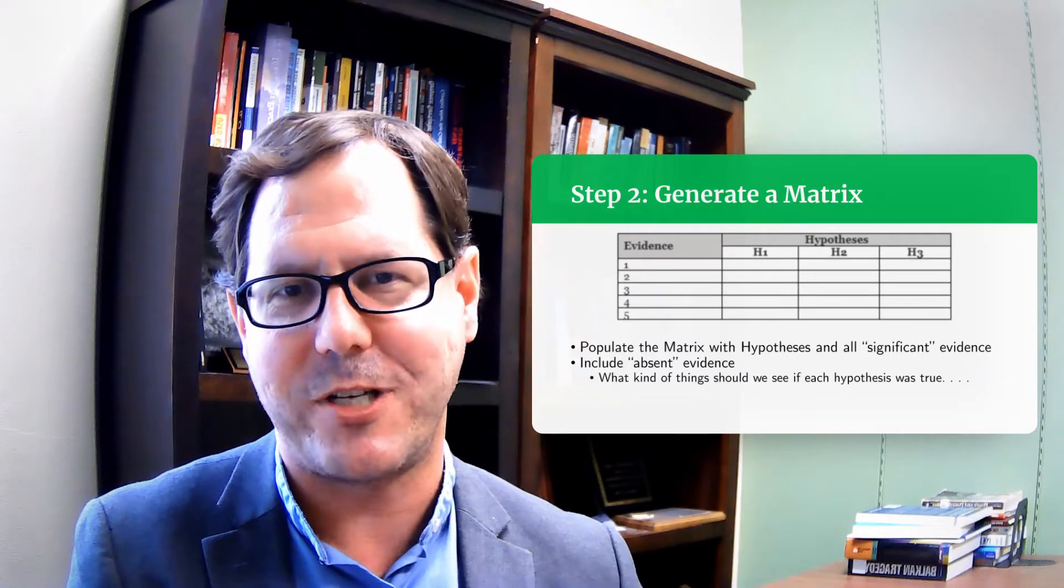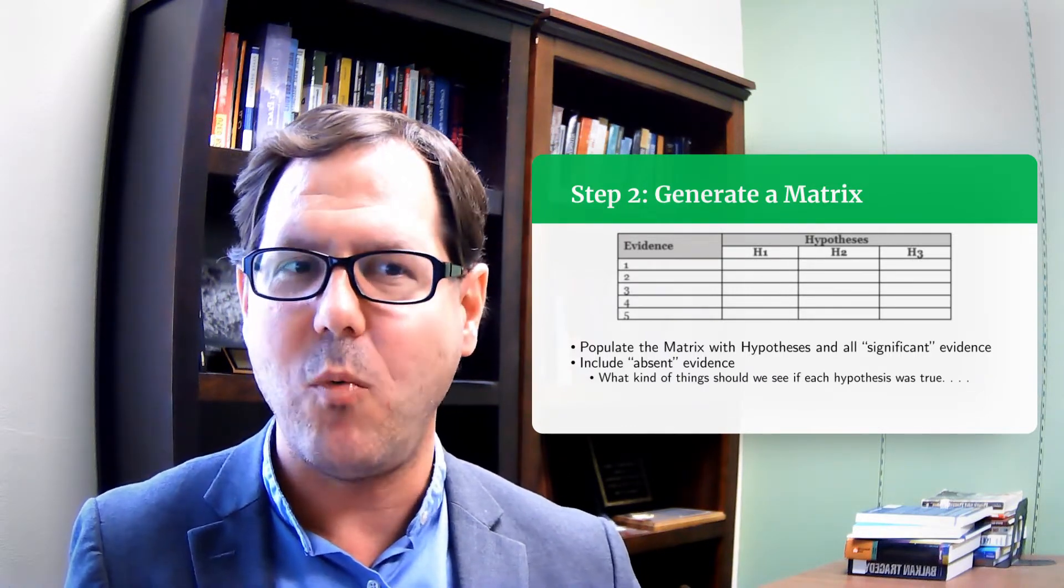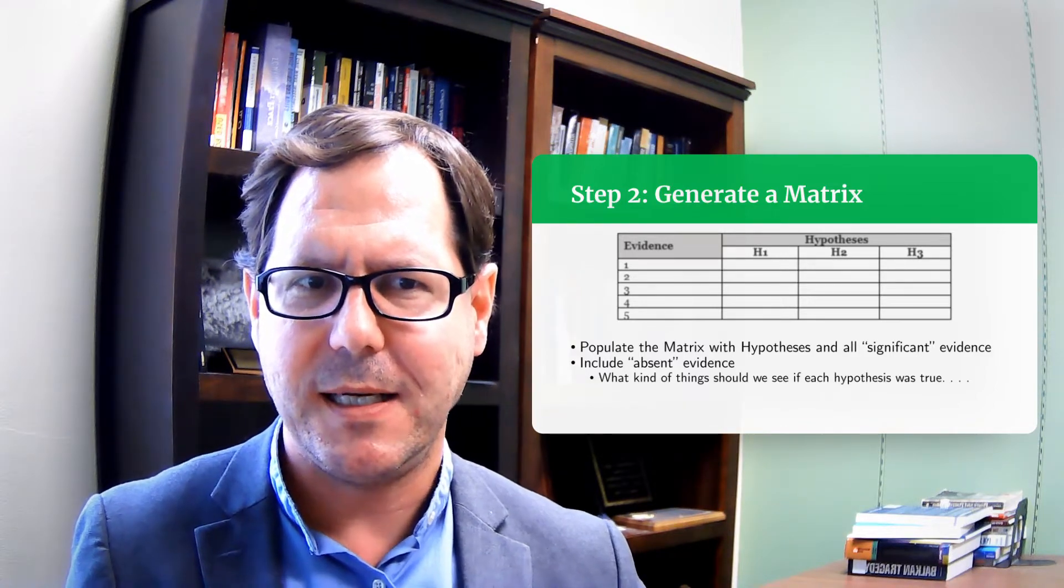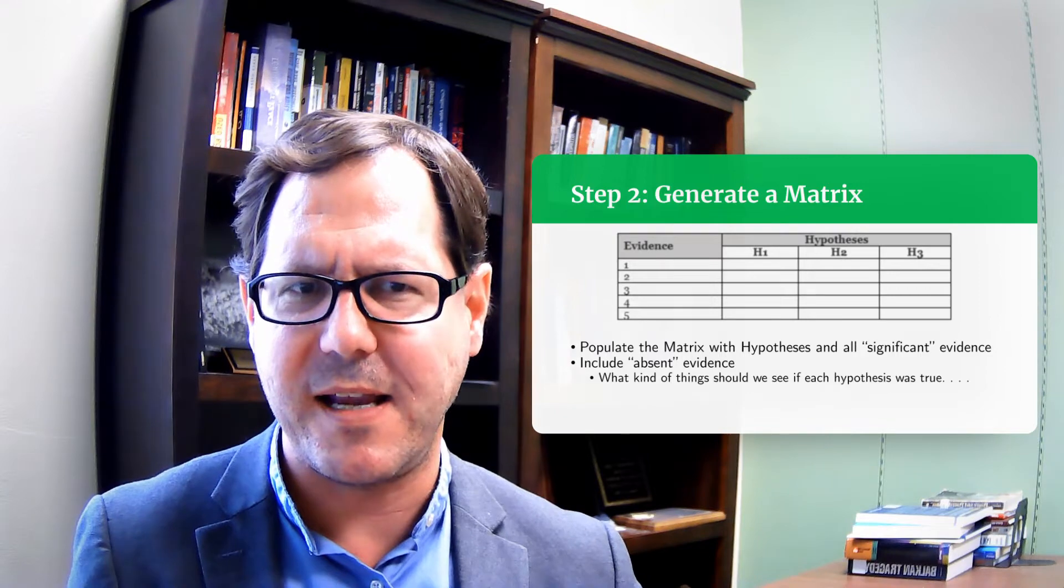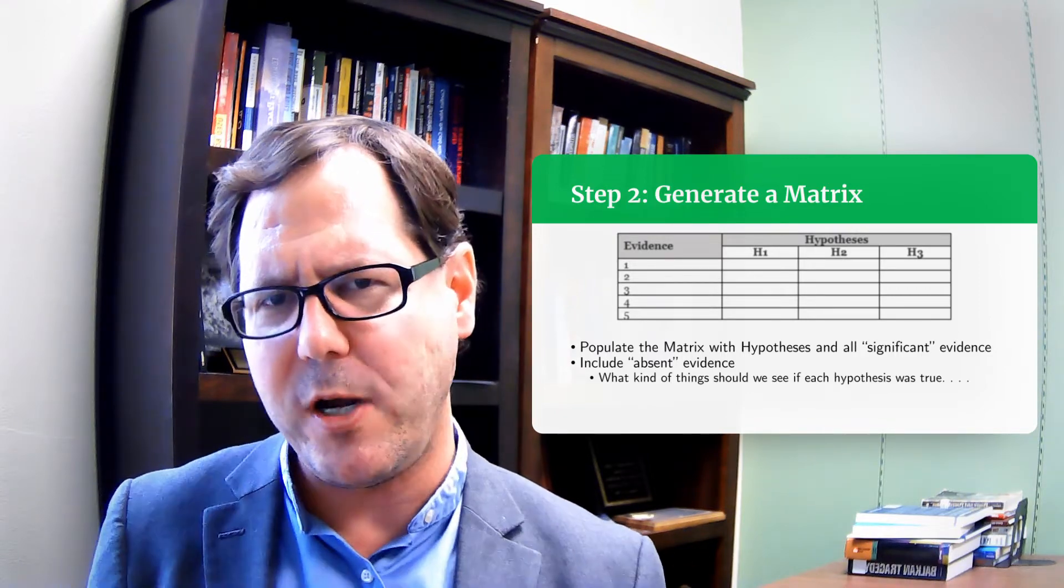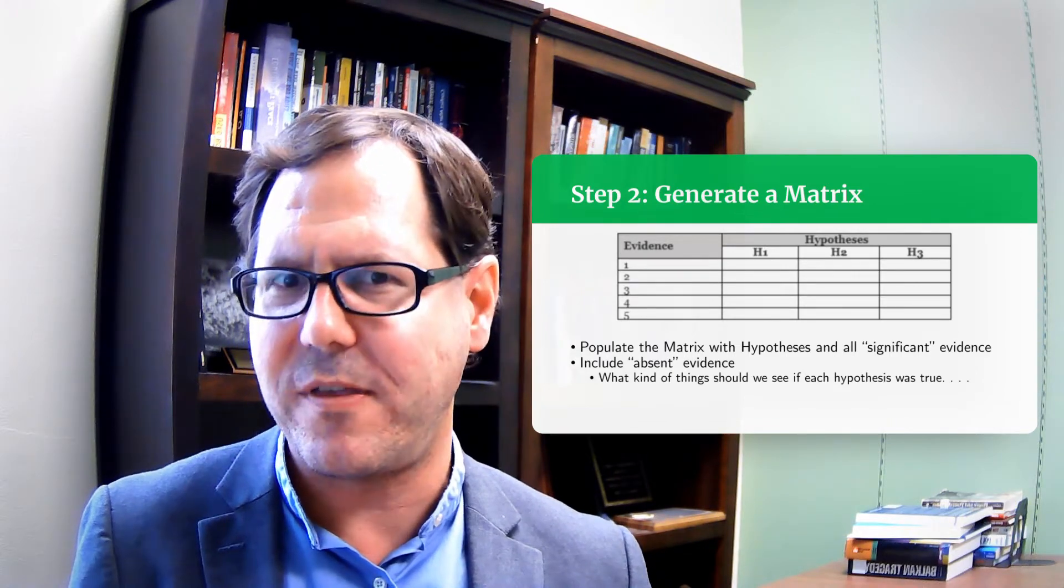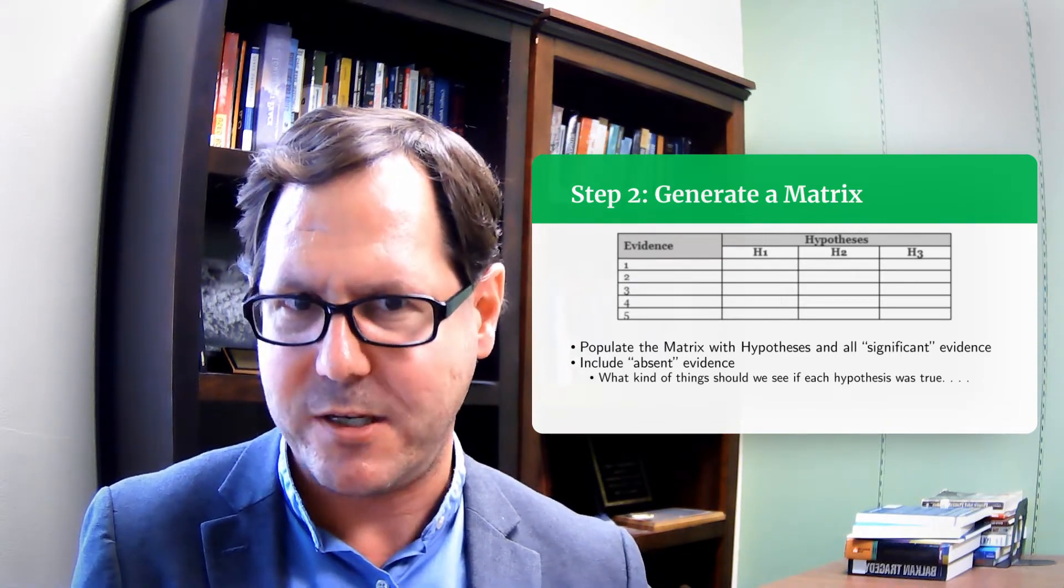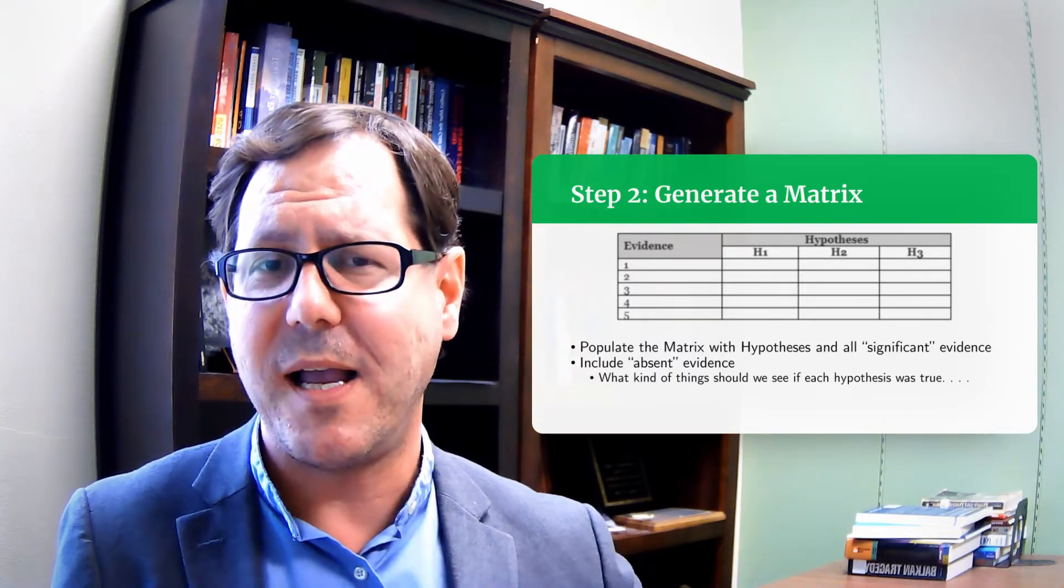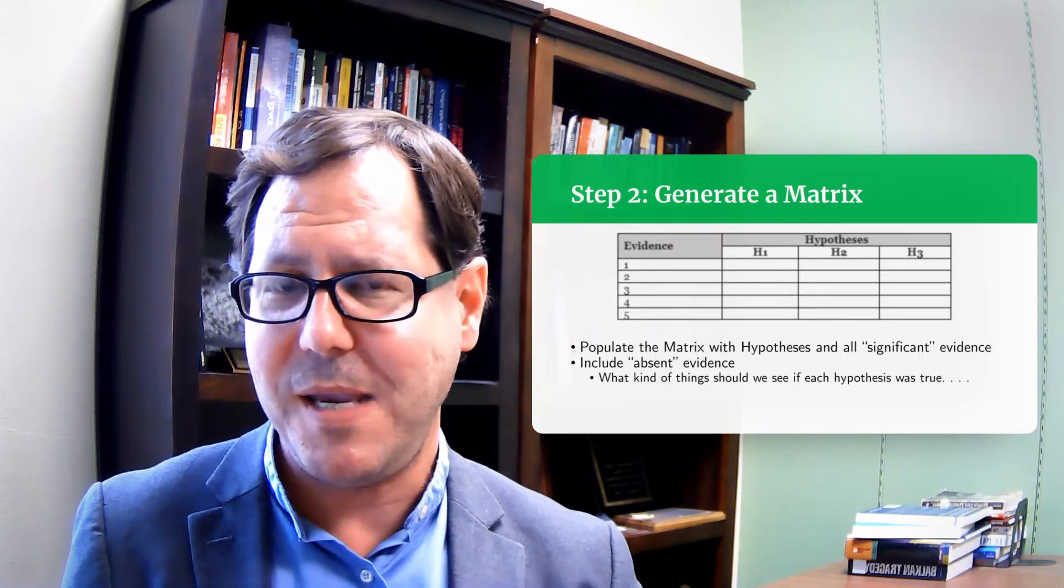But we should also think not just about what evidence we have in front of us, but also what is the evidence that we don't have. What are the kinds of things that each of these hypotheses would suggest that we should have, but maybe are missing? And it's really worth having an important conversation with yourself about each of those hypotheses and the kind of breadcrumbs that they should be leaving. Because if you don't have those breadcrumbs, what does that mean?